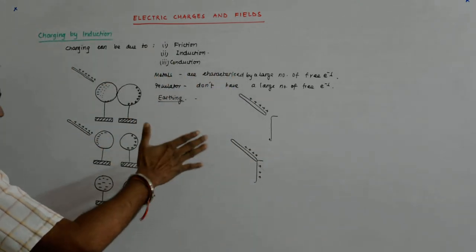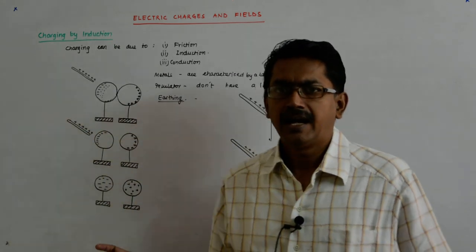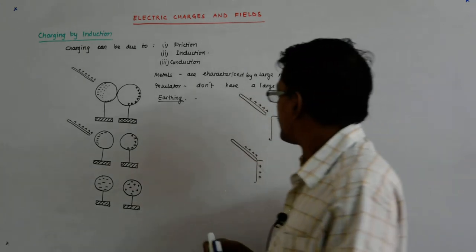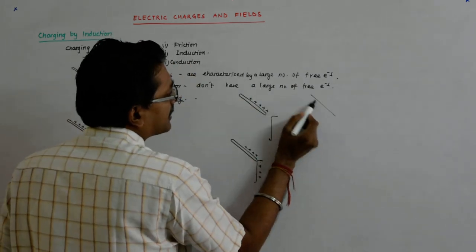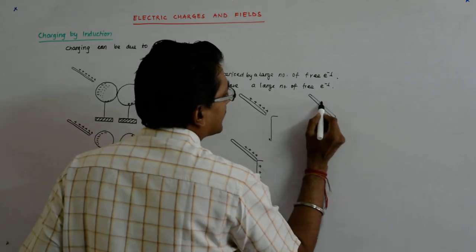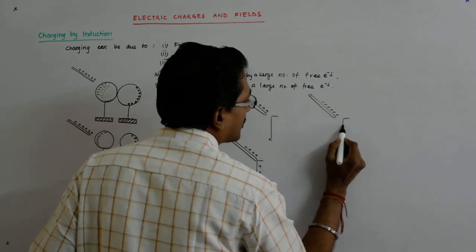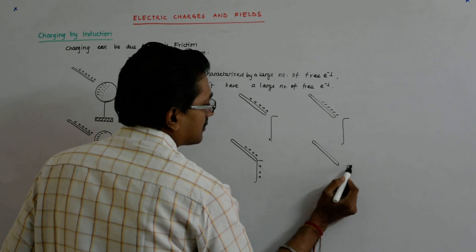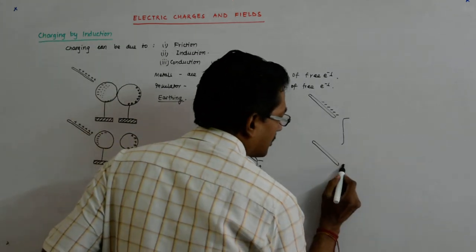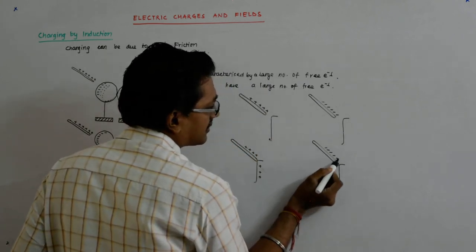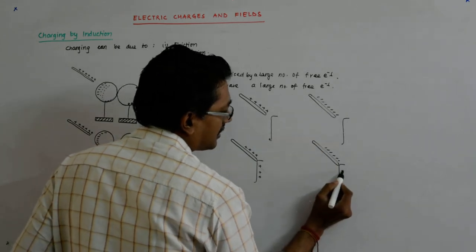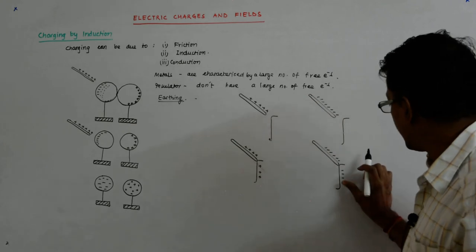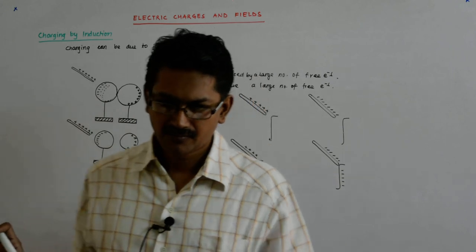The charges will not be equal but they will be distributed. Since the rod was positively charged, this conductor will also become positively charged. Now if it was a negatively charged rod, it has an excess of electrons. If it touches the other conductor, some of that excess will pass on, so this will become less negatively charged and this will become more negatively charged until that flow stops.